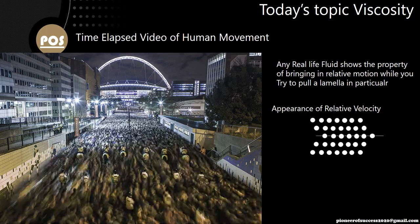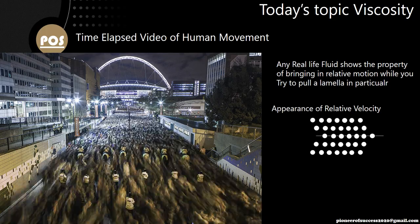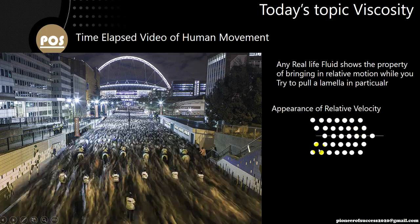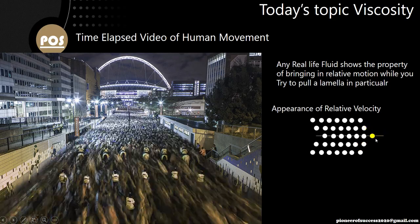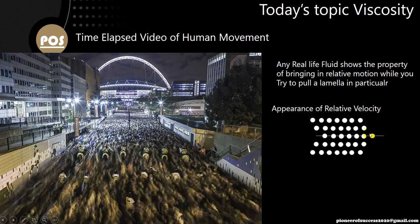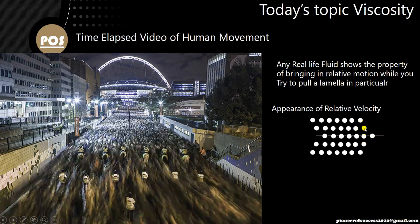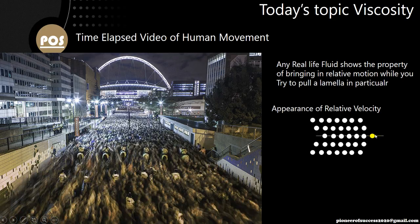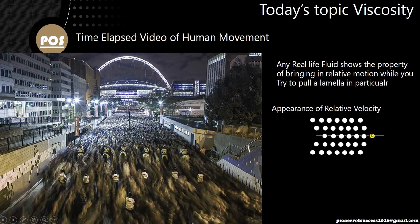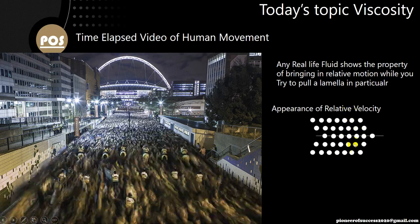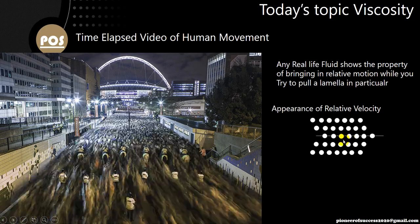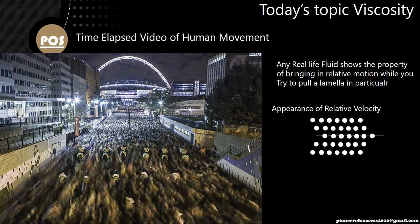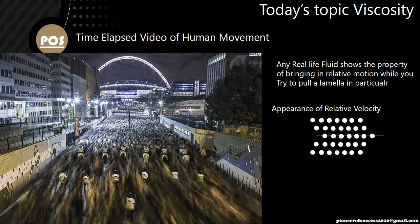So it will move with a higher velocity, but the layers adjacent to this will not move with the same velocity — they will be running behind the middle layer, and hence a relative motion, a relative velocity will exist, and that will lead to the viscosity.